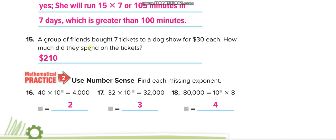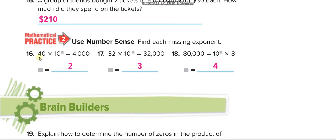A group of friends bought seven tickets to a dog show for thirty dollars each: seven times three equals twenty-one, with one zero — two hundred ten dollars. For the power of ten problems: forty times ten to the power two has one zero in forty plus two from the power — three zeros total. Two times ten to the power three: no zeros in two, so three zeros from the power — two thousand. Eight times ten to the power four: four zeros — eighty thousand.